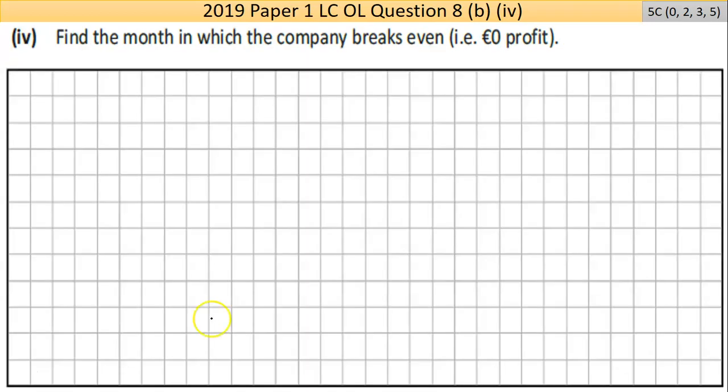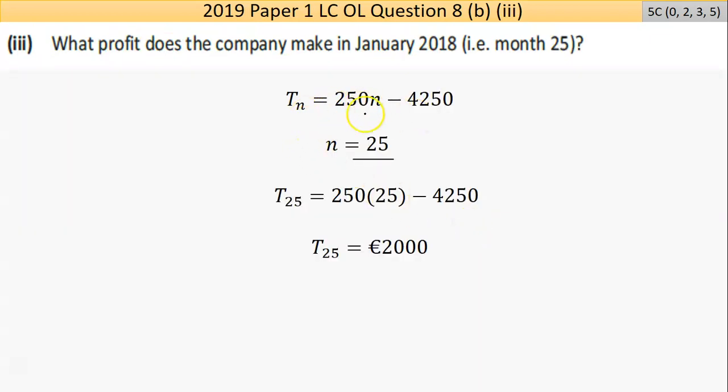Now part four says, find the month in which the company breaks even. If we went back, in the statement here we had two unknowns. They told us this unknown. In part four, they're telling us this unknown and we have to find the other one. So in anything, you have to be only one unknown for it to be able to be solved. If they didn't tell us any information, there was two unknowns, couldn't go any further. So once we're told one of the pieces, we can do algebra to find the other.